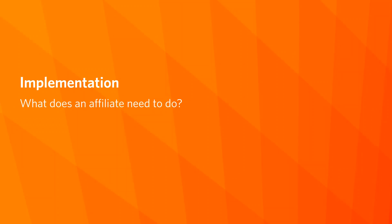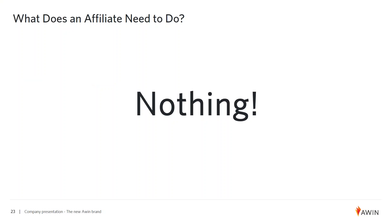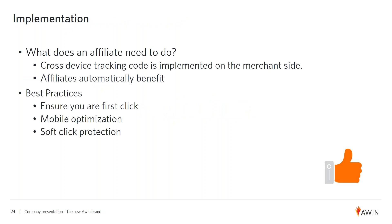So, implementation — what does an affiliate need to do? Here's the best news you're going to get all day: nothing. You don't have to do anything for cross-device tracking to work for you. Cross-device tracking code is implemented on the merchant side; the affiliate doesn't have to do anything for that to kick in — you automatically benefit from it being in place. But there are still some best practices: make sure you're the first click, and since mobile has become such a huge part of the process, make sure that your site works easily on all mobile devices. Also remember that AWIN has soft-click technology, which prevents large coupon or loyalty sites from overriding an existing AWIN cookie, ensuring the right affiliate gets credit.